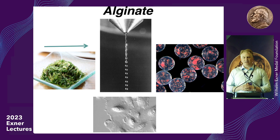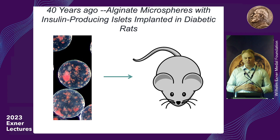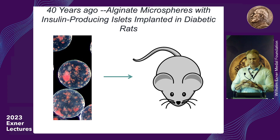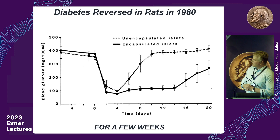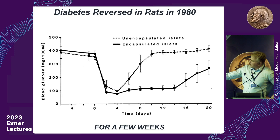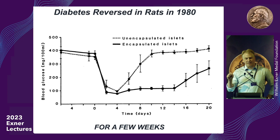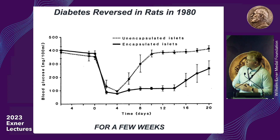This is not new work. There's a seminal paper from over 40 years ago published in Science by Lim and Sun. They took islets encapsulated in alginate and placed them into a diabetic rodent. On the y-axis is blood sugar and on the x-axis is time after implantation. They found that transplanting free islets led to rapid immune attack and killing — the dashed line — but encapsulated islets showed maintained function lasting a couple of weeks, a really important seminal moment showing you could get blood sugar control from polymer-wrapped cells.